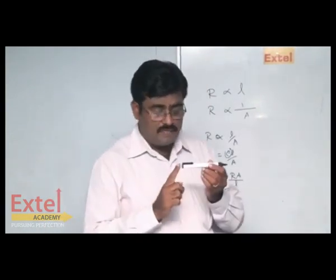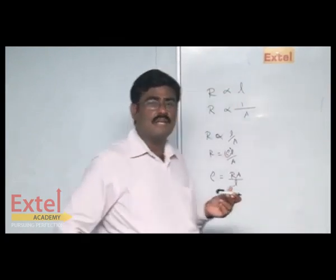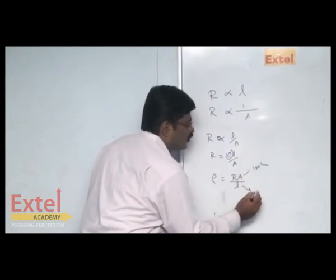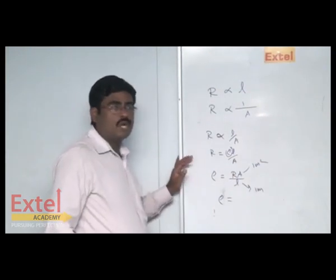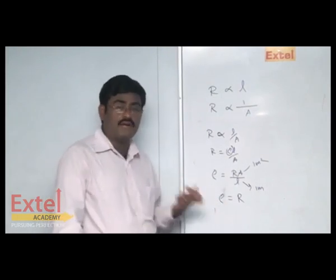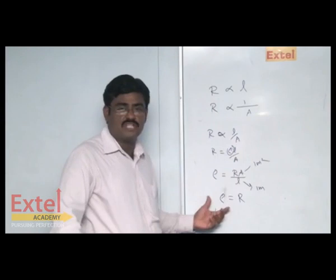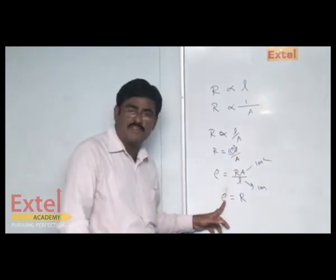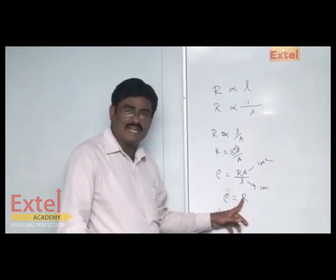Suppose we assume a conductor having a unit area of cross section equal to one meter squared, and a unit length equal to one meter, then the formula gives rho equals R. So we can define electrical resistivity, also called specific resistance: the specific resistance of a given material is numerically equal to the resistance of a conductor.